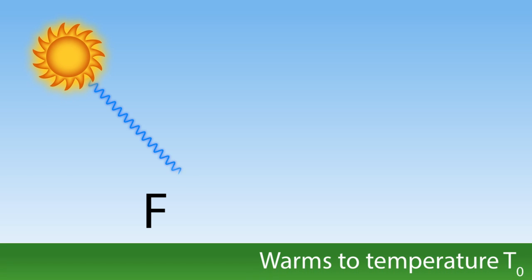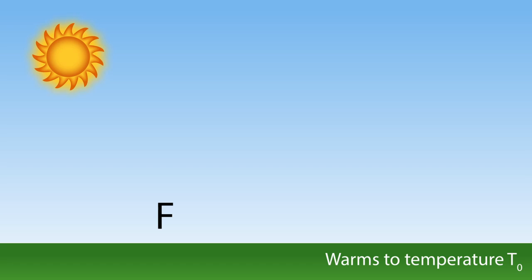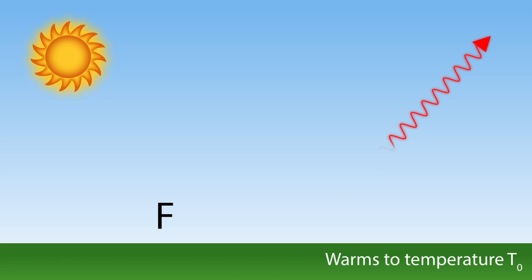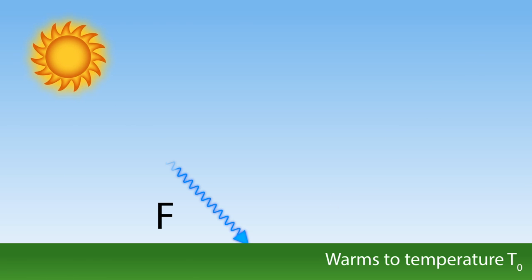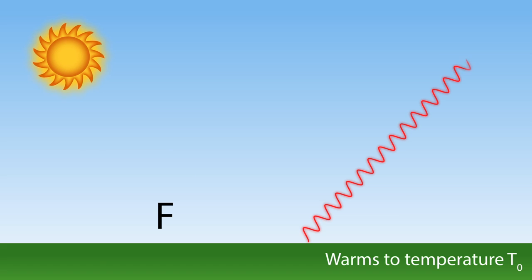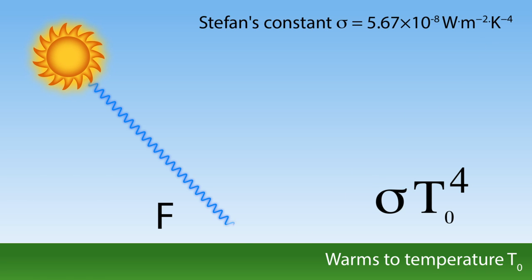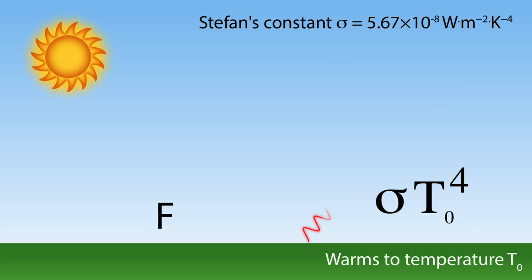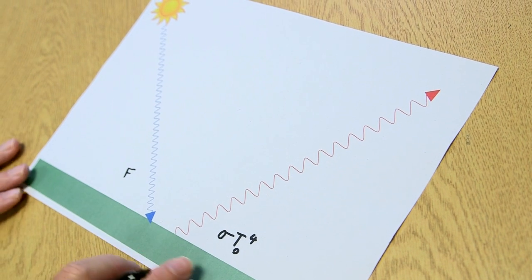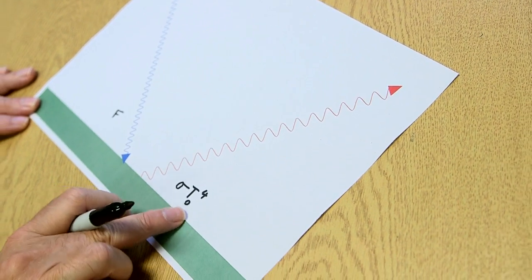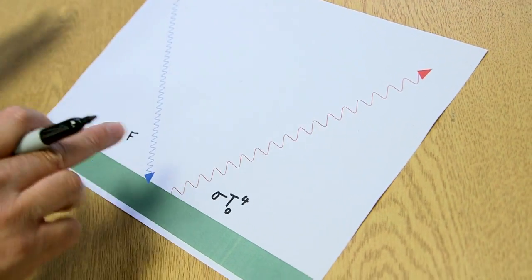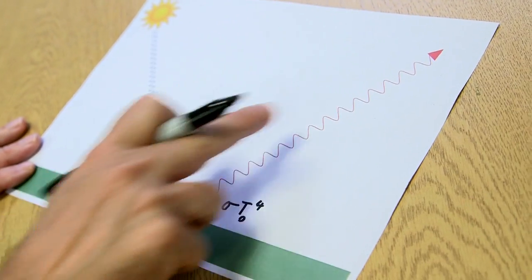The Earth gets warmer and warmer. The net effect when something warms up is it starts giving out radiation itself. So the Earth is going to warm up to a point where it's giving out radiation, and the amount of radiation it gives out depends on the temperature via a thing called Stefan's law, which basically says the amount of energy that the Earth re-radiates back into space is given by sigma times T0 to the fourth power. Things keep heating up, and as the Earth heats up this number gets bigger, until eventually you reach a point of equilibrium where there's as much energy coming in as going out.